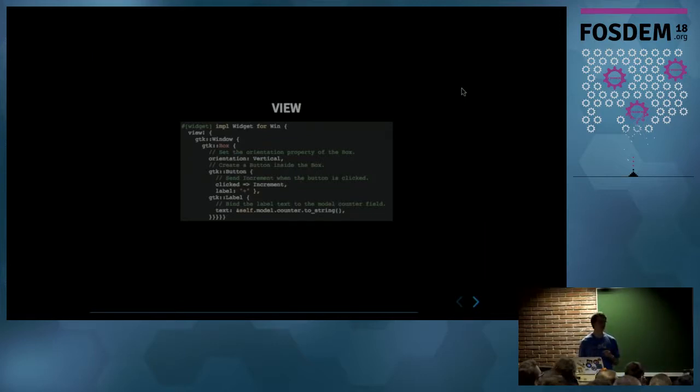And we can also do bindings, meaning that at the last line, we have the text property of the label that is bound to an attribute of the model. So that means that whenever this attribute of the model is changed, that will update the view.